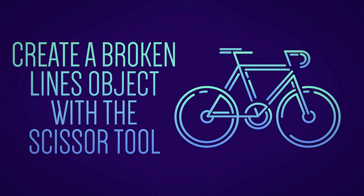Hey guys, welcome back - this is Shetan from Devil Cube. This tutorial is going to be in Illustrator, and we're going to be learning to create a cool lines-type logo. We're going to be using the scissor tool to create this effect, which is actually one of my most favorite tools. A lot of people have been asking how to use the scissor tool, so I'm going to teach you guys.